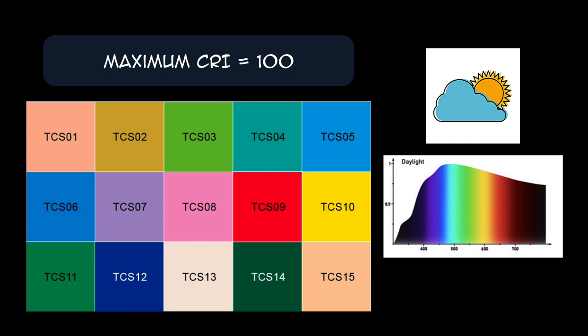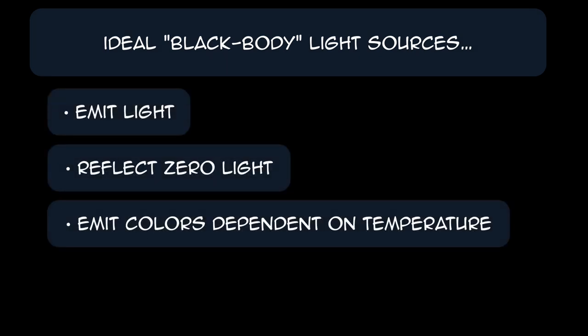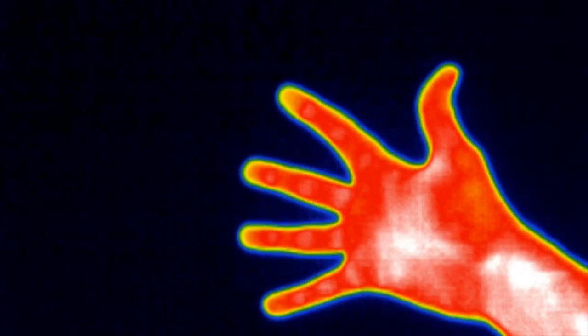Let's clarify the meaning of an ideal black body light source. An ideal light source emits light but reflects no light at all. The colors of emitted light depend only on the temperature of the object. In fact, all objects emit light based on their temperature. Even you are emitting light right now, but despite what you may think, you're not that hot, so the light you emit is mainly infrared — below the range of visible colors.